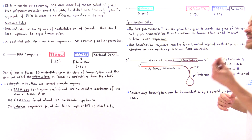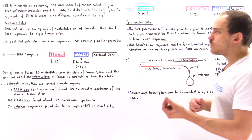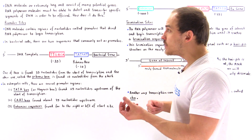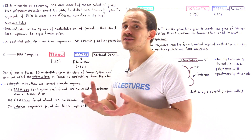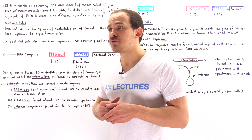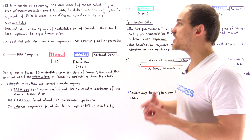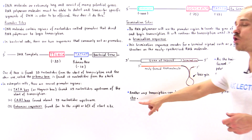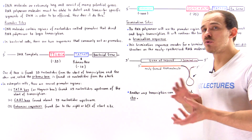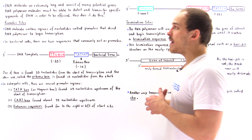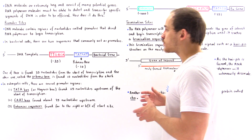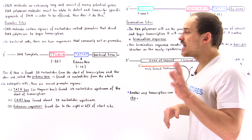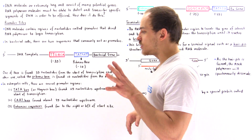Another way to terminate transcription is by using a special protein known as Rho. The mechanism of this protein will be discussed in a future lecture.